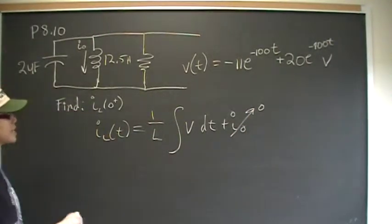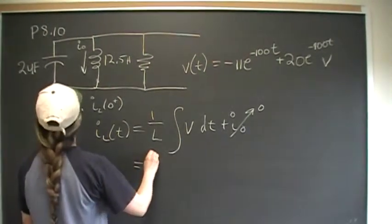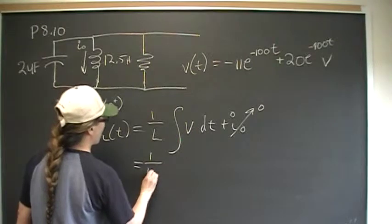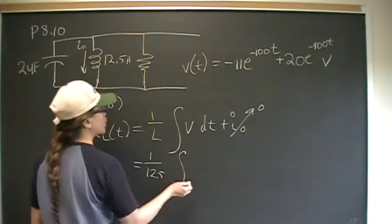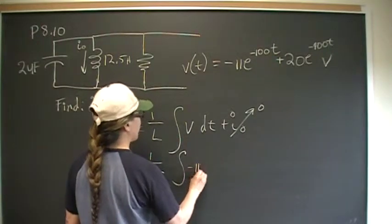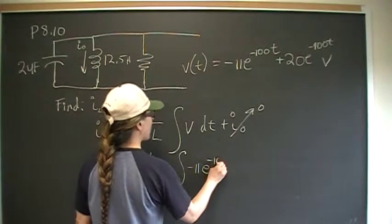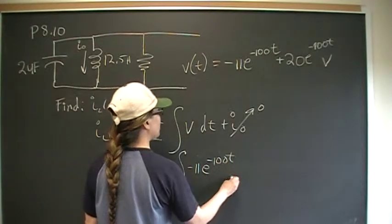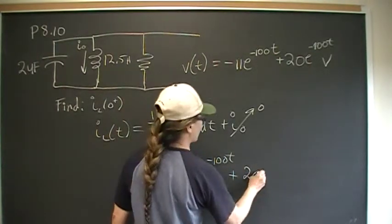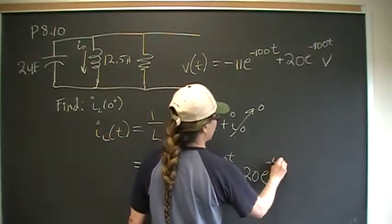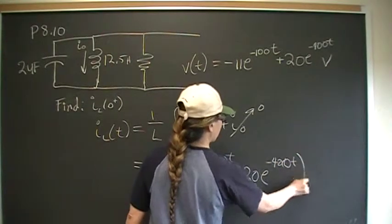So now all we have to do is integrate, and that is really easy. So 1 over 12.5 times the integral of negative 11e to the negative 100t plus 20e to the negative 400t dt.